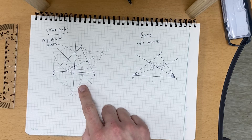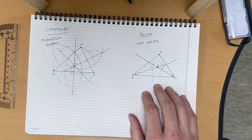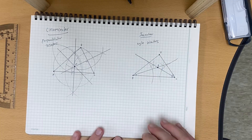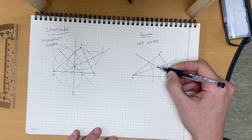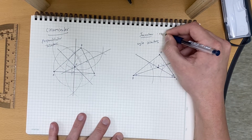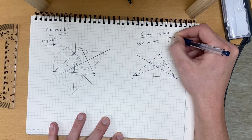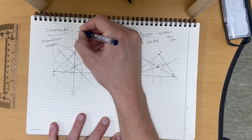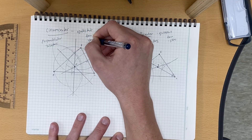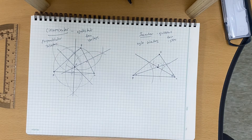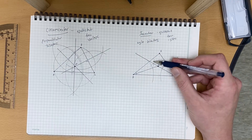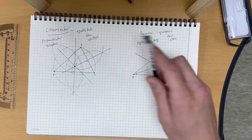Just like the circumcircle we drew earlier, this is going to be called the incircle. The incircle is going to be on the inside of our triangle because our incenter is equidistant from the sides of our triangle. Our circumcenter was equidistant from the vertices. To find the radius, we have to drop a perpendicular line from point P to any one of our lines — I'm going to draw from point P to line AC.